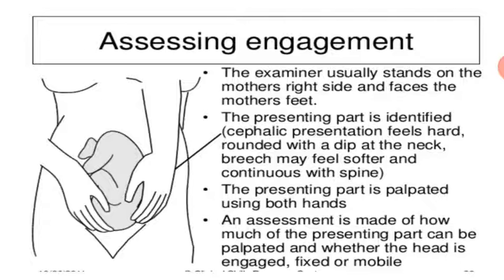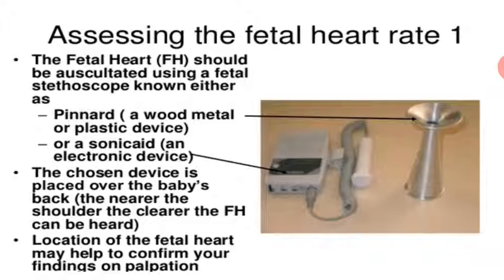Cephalic presentation feels hard, round, with a neck angle, while breech may feel softer and continuous with the spine. The presenting part is palpated using both hands. Assessment is made of how much of the presenting part can be palpated and whether the head is engaged, fixed, or mobile.